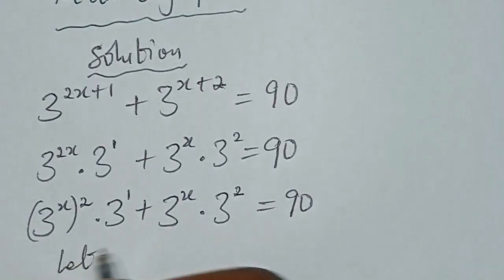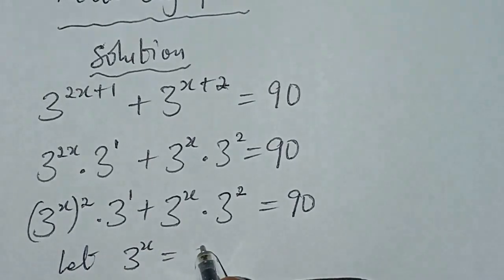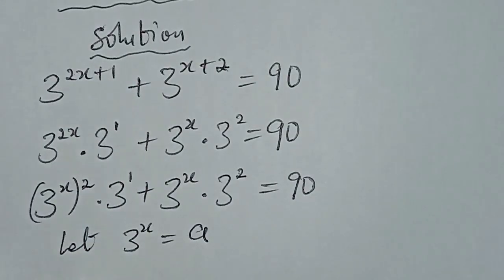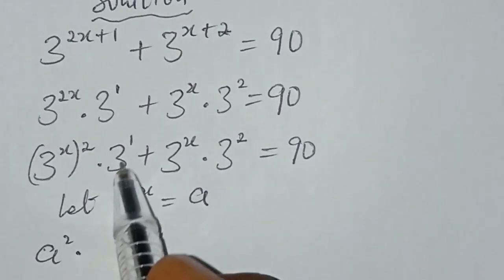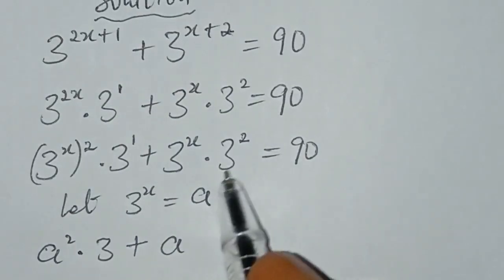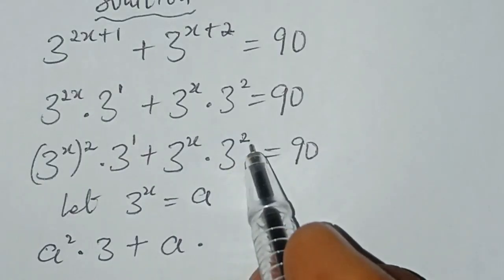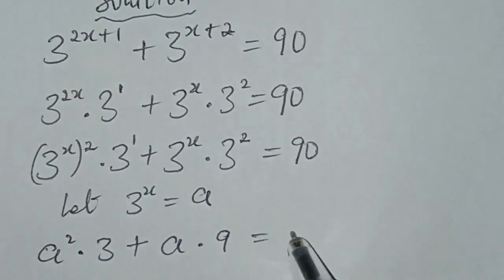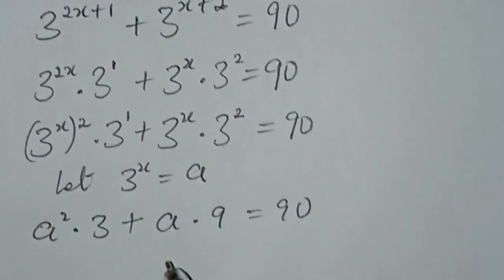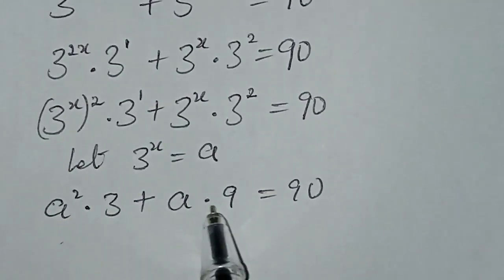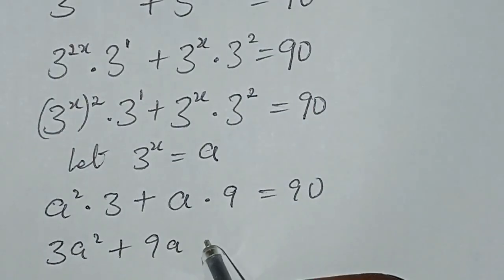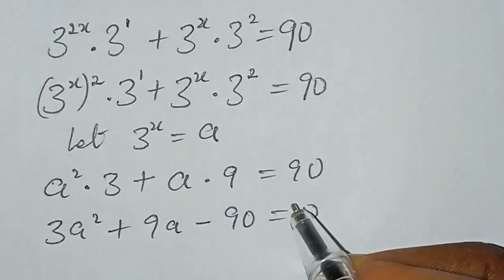Now let 3 to the power of X equal to A. We then have A squared multiplied by 3 to the power of 1, which is 3, plus A multiplied by 3 to the power of 2, which is 9, equal to 90. We bring 90 to the left hand side and we have A squared plus 9A minus 90 equal to 0.